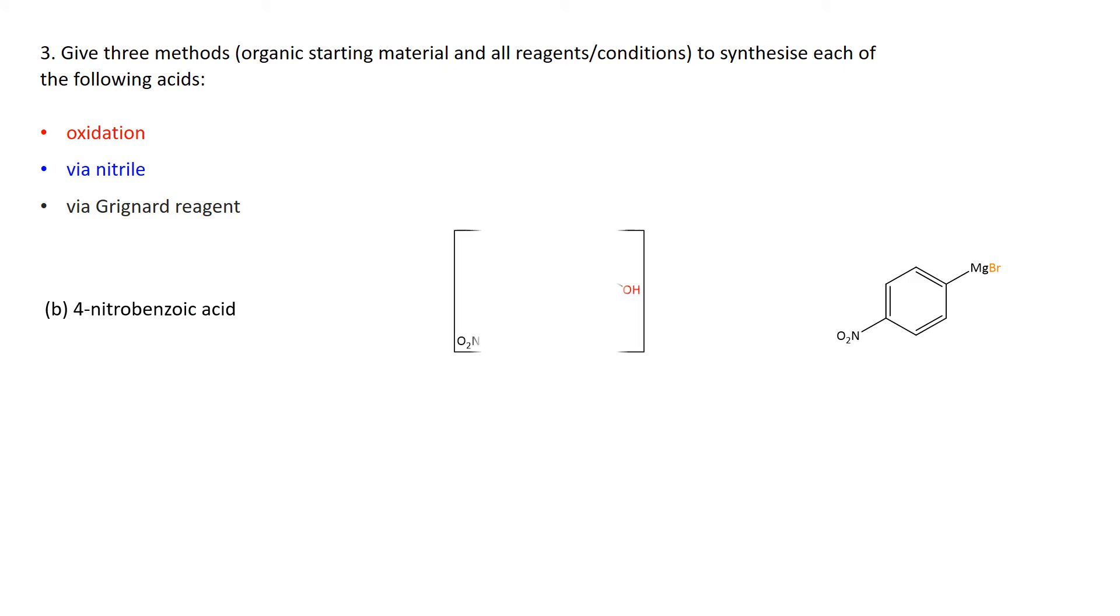So 4-nitrobenzoic acid right there, where you see an acid group, so we can get to an acid group by oxidation of the appropriate primary alcohol. So there we are, we'll just take this nitrated benzyl alcohol and oxidize it to the acid group using our acidified chromium-6.